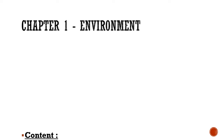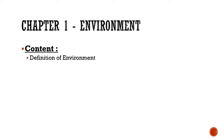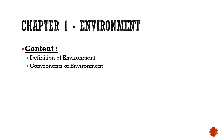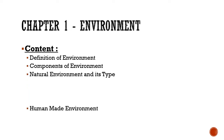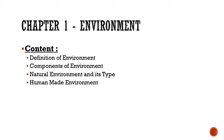This chapter contains the Definition of Environment, Components of Environment, Natural Environment and Its Types, Human Made Environment, and Human Environment and Ecosystem.